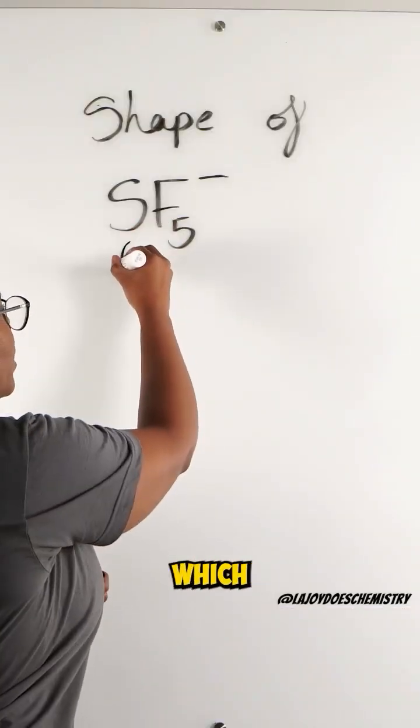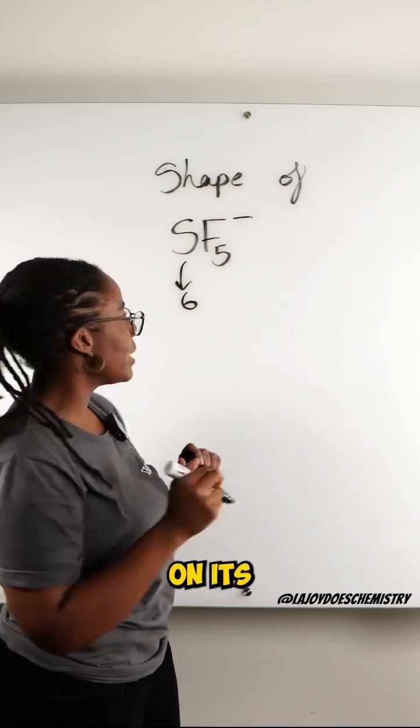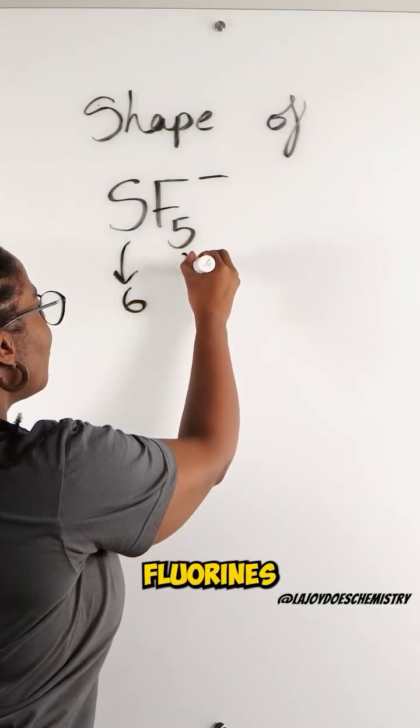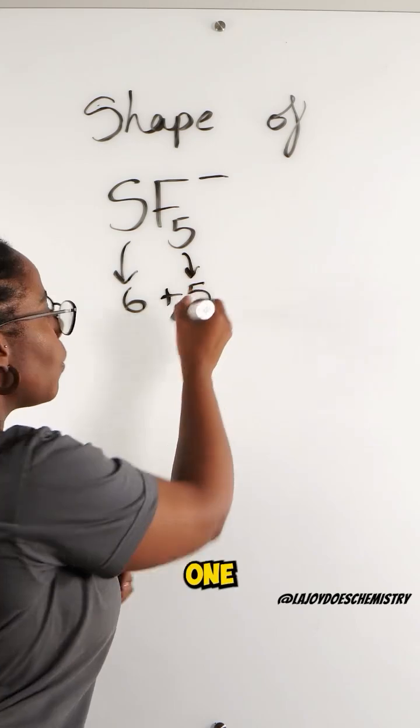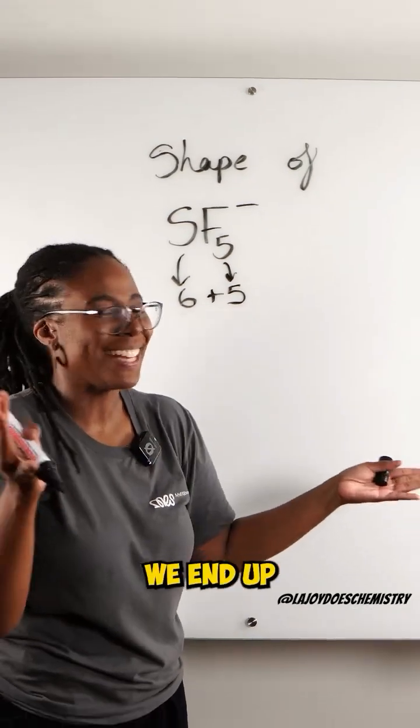So the sulfur which is our central atom is in group six so six electrons on its outer shell. Then we have five fluorines coming in each contributing one electron each so we end up with five.